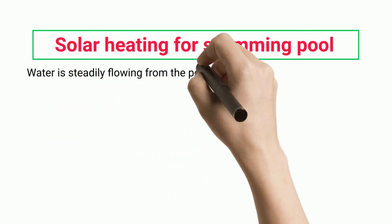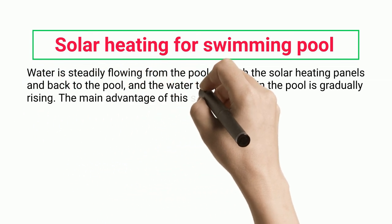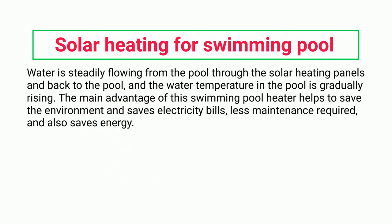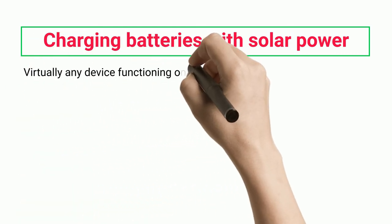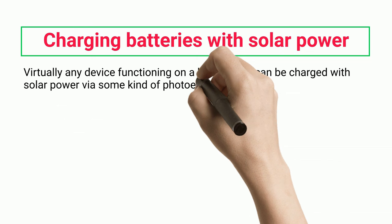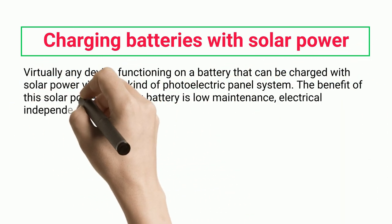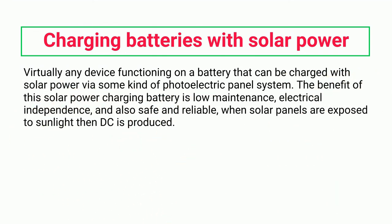Solar heating for swimming pools works by steadily flowing water from the pool through solar heating panels and back, gradually raising the water temperature. The main advantages are saving the environment, reducing electricity bills, less maintenance required, and energy savings. Virtually any battery-powered device can be charged with solar power via a photoelectric panel system. The benefits of solar-power battery charging include low maintenance, electrical independence, and being safe and reliable. When solar panels are exposed to sunlight, DC electricity is produced.